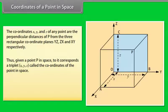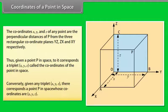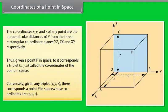Conversely, given a triplet (x, y, z), there corresponds a point P in space whose coordinates are x, y, z.